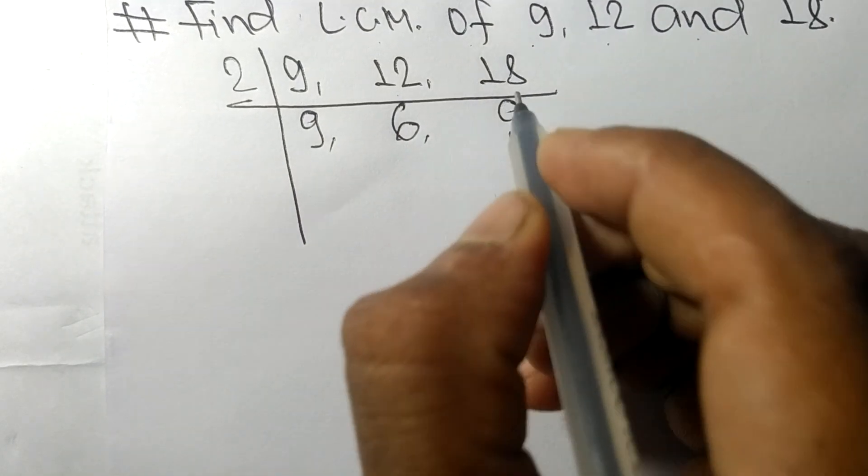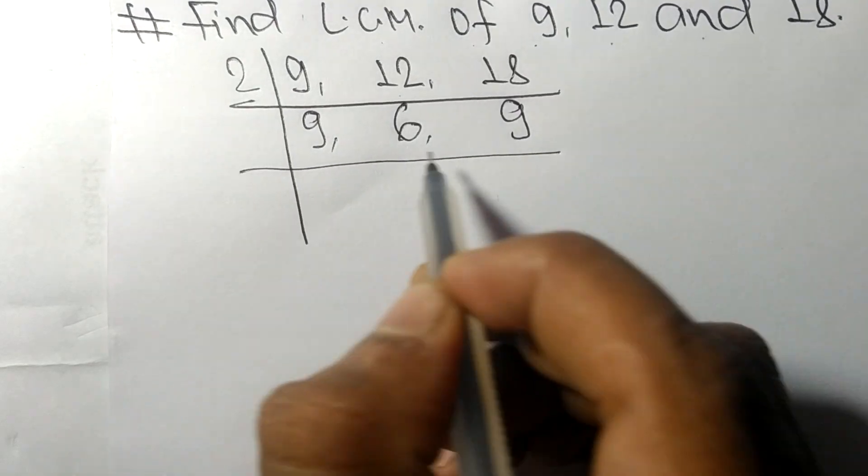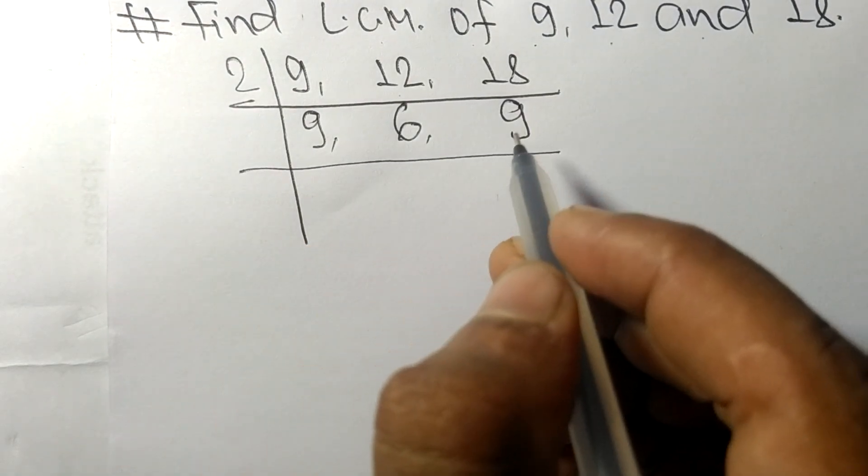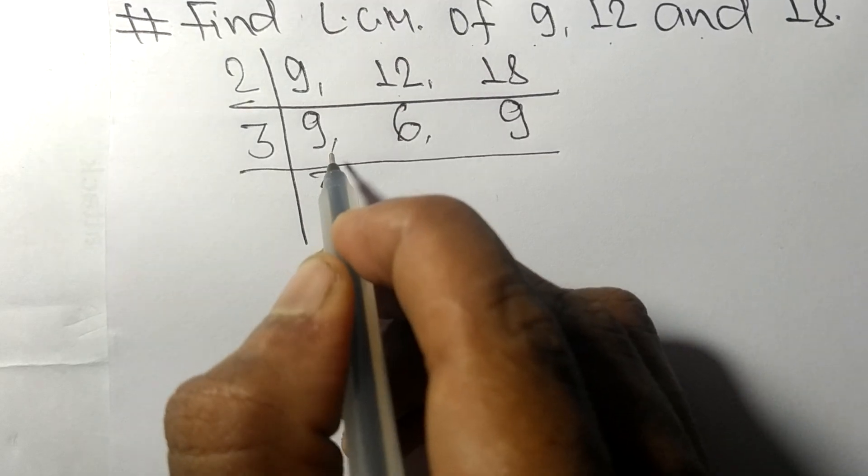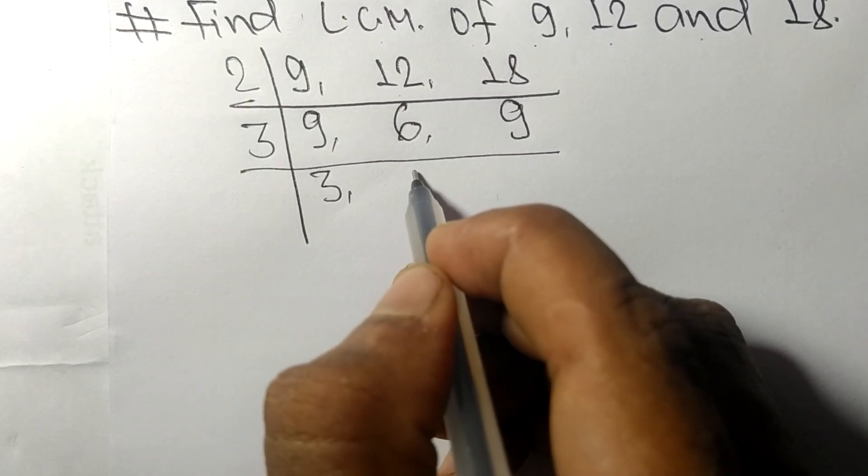So now these all numbers are divisible by 3. 3 times 3 mean 9, 3 times 2 mean 6, 3 times 3 mean 9.